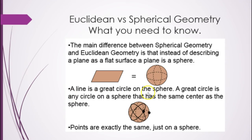A line in spherical geometry is no longer just a straight line. It's actually a great circle. And a great circle is any circle on a sphere that has the same center as the sphere. So each one of these circles drawn on here is a great circle, and we consider those lines. And then points are exactly the same in both kinds.